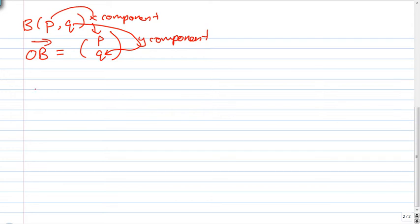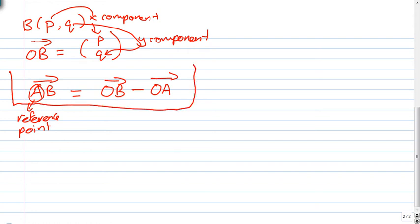Now comes the next interesting part. Let's say we have a vector AB. AB means A to B with two points A and B, and it also means that AB is the position vector of B with reference to A. This is the reference point. And we say that AB can be expressed as OB minus OA. Now this is something that you really have to take note of. It will really come in handy when you do your mathematical questions on vectors.